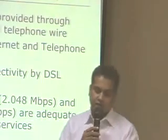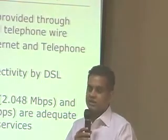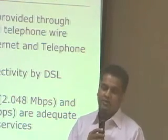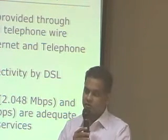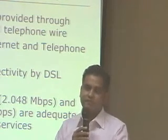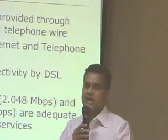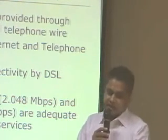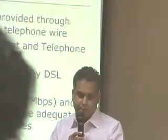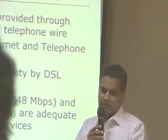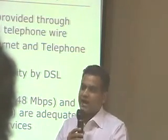If you go to the Digital Subscriber Line, in this case you don't need to lay down your own copper or fiber. Whatever telephone line you have at your home, you can use that. You can use both internet and telephone using the same cable. The only thing you need is a DSL modem at your home, and this gives you always-on connectivity. To get this service, the telephone company has to install a DSLAM in their central office.